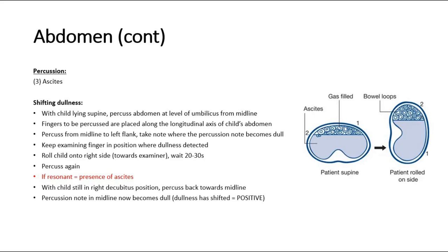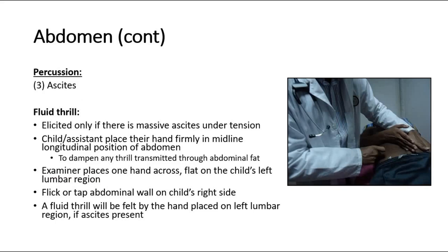If there is massive ascites under tension with a very distended abdomen, perform the fluid thrill test. Ask an assistant — or the child if old enough — to place their hand firmly at the midline of the abdomen in a longitudinal position. The examiner places one hand at the lumbar region on one side and flicks the abdominal wall on the opposite side with the other hand. If ascites is present, the examiner will feel the thrill transmitted to the receiving hand, confirming a positive fluid thrill indicating massive ascites.